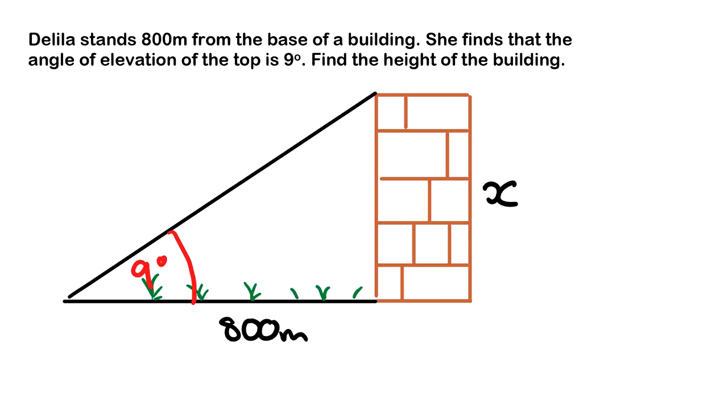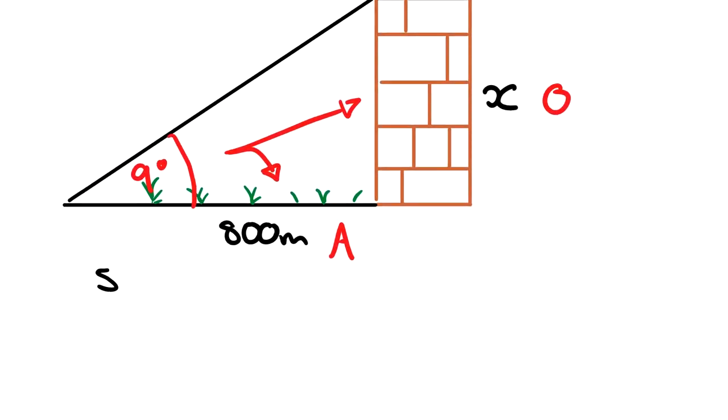We have a straight opposite, so O, and then we have a curved angle here, so that's adjacent. We have O and A, so we know if we're using SOHCAHTOA, we have O and A, so we're using TOA.